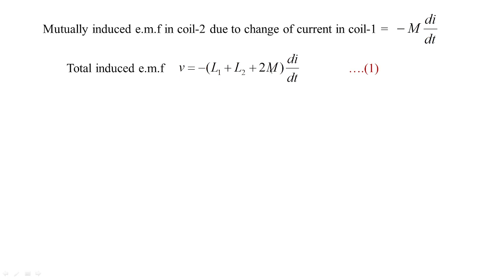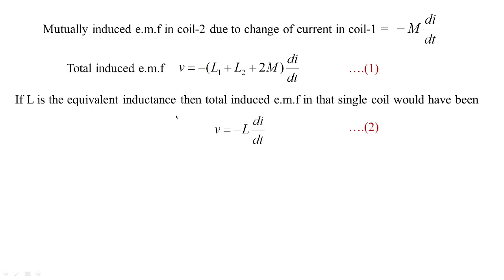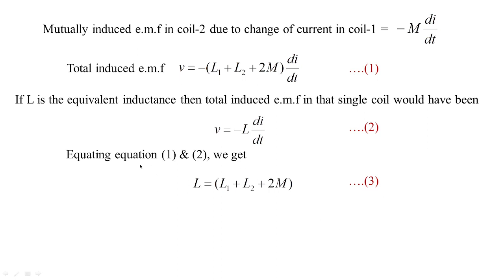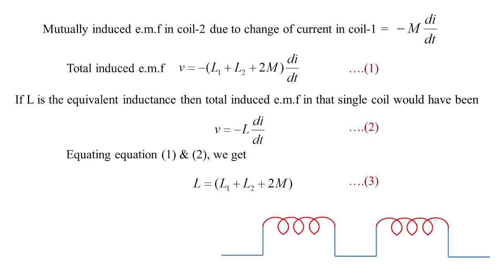The total value becomes 2M di/dt, and we know that the equivalent inductance L satisfies V = minus L di/dt. Equating the two expressions, L is equivalent to L1 plus L2 plus 2M. This is the formula for total inductance when the coils are cumulatively arranged in series.